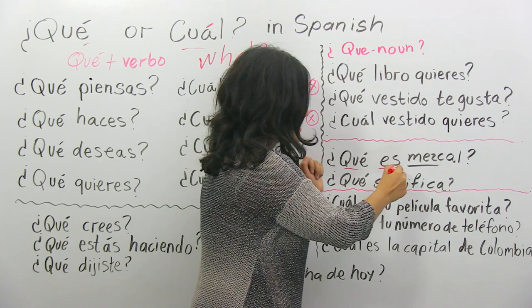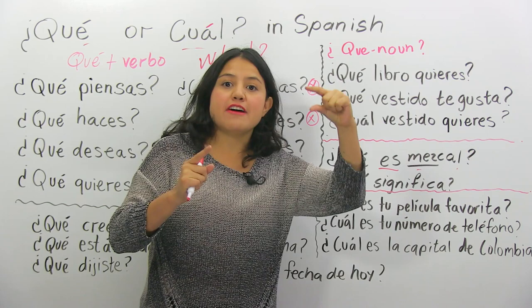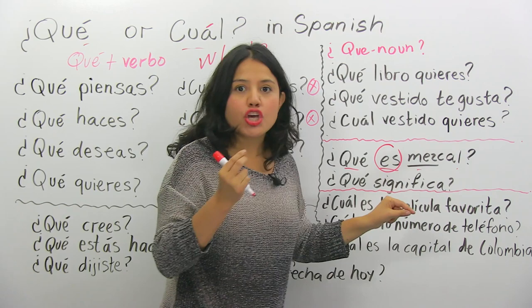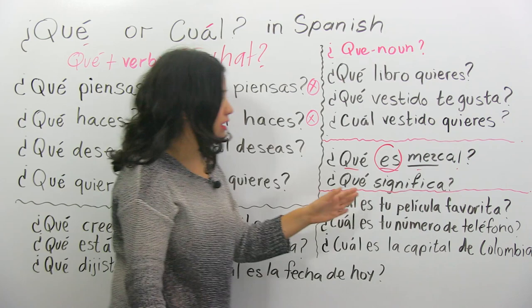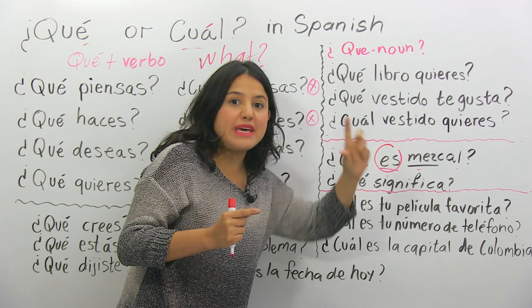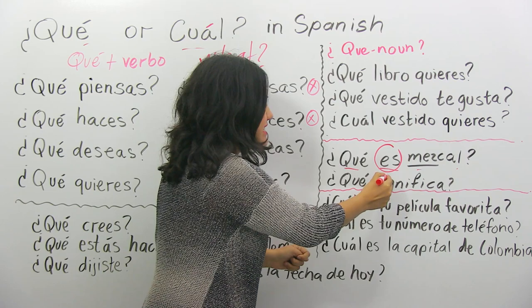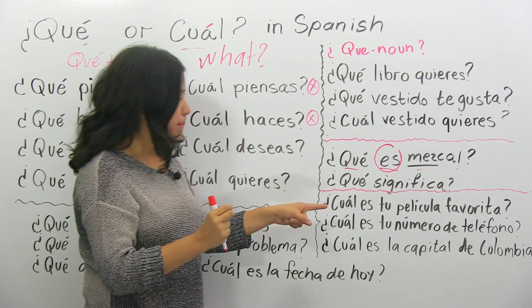¿Qué es mezcal? When you have the verb 'to be' in third person — es — ¿qué es? — you are asking for a meaning, un significado. You're saying, what does it mean, mezcal? What is it, mezcal? That's why when you use qué with the verb ser: ¿qué es mezcal? ¿Qué significa? You're saying ¿qué significa mezcal? — that's why this is the number one tip.